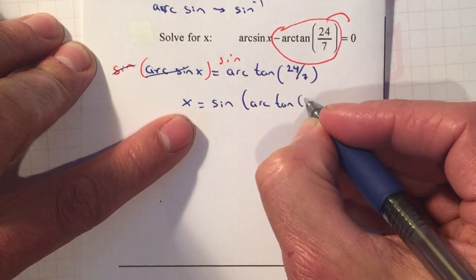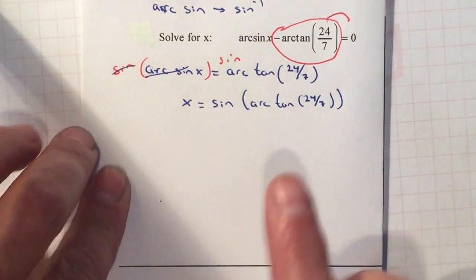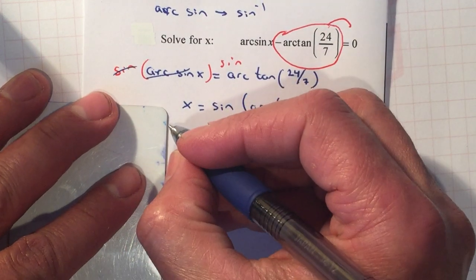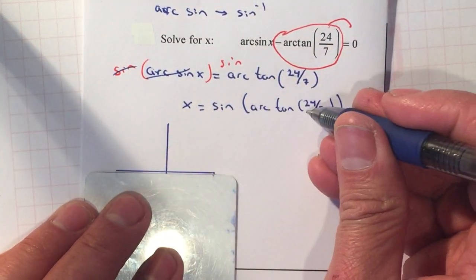Now we have sine of arc tangent of 24 over 7. We don't know what the angle is, so we're going to have to build a triangle within the first quadrant since it's positive.